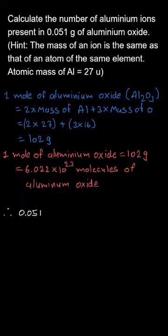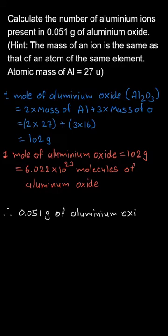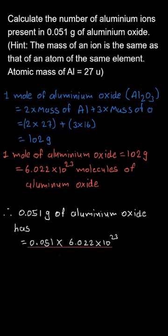We need to find the number of aluminium ions present in 0.051 grams of aluminium oxide. To calculate the number of molecules in 0.051 grams, we cross multiply: 0.051 × 6.022 × 10²³ divided by 102.